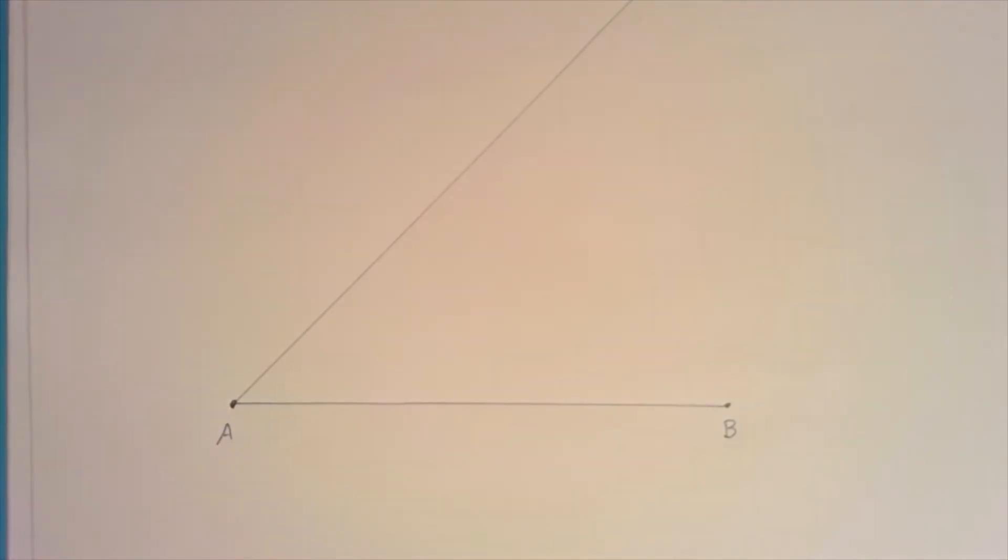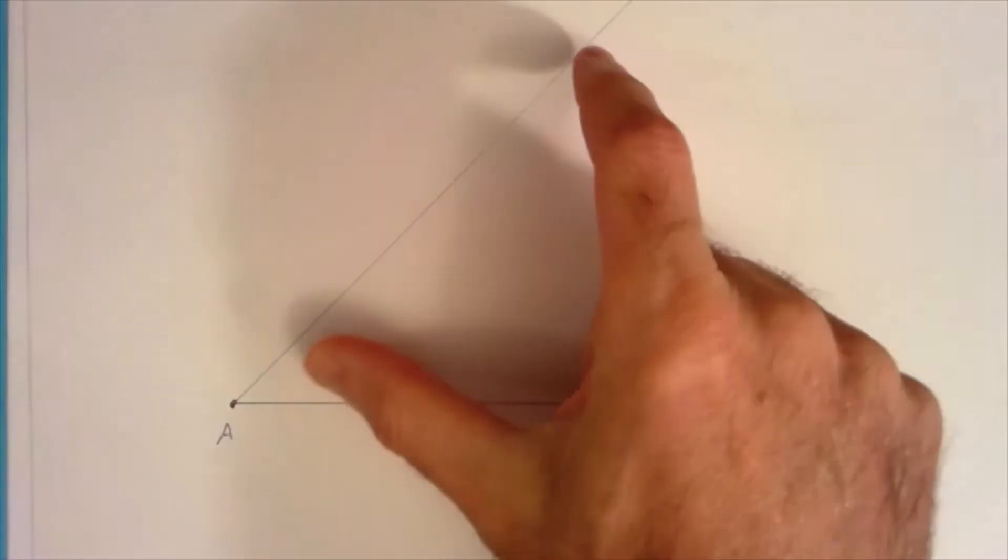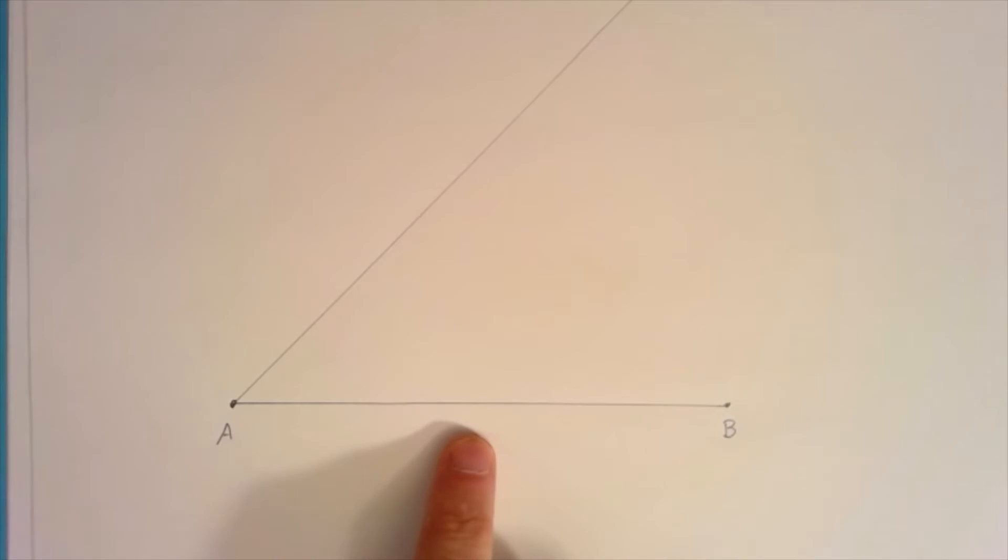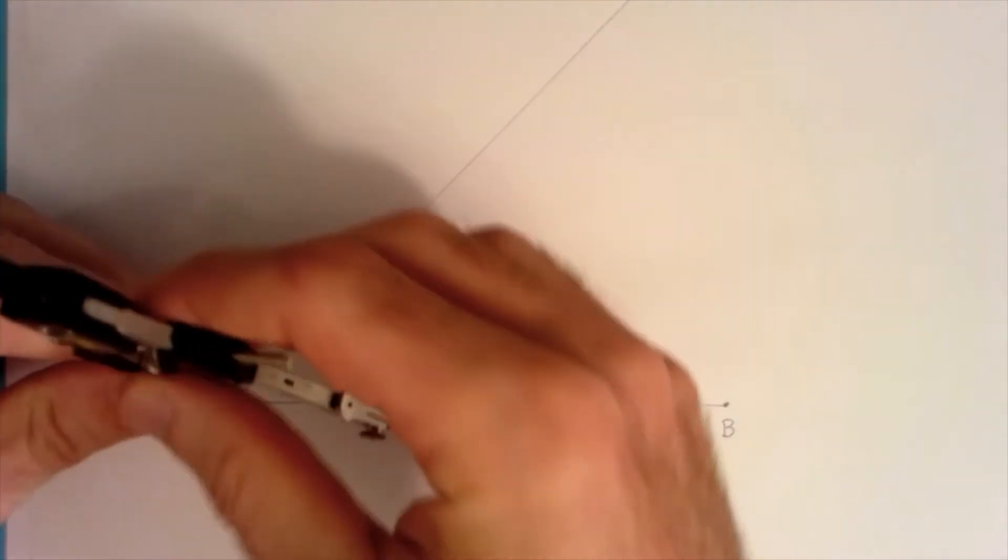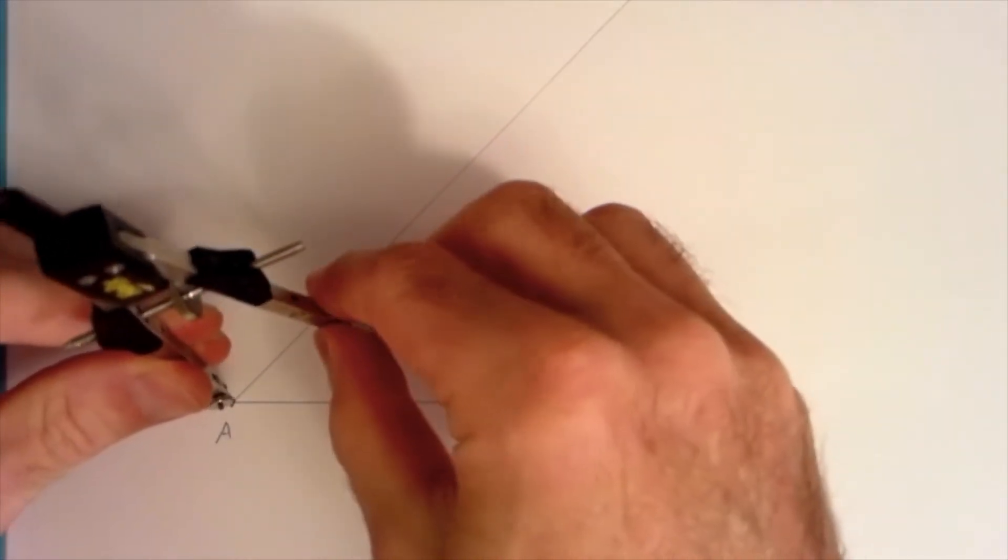And then what we're going to do is we're going to mark off three equal segments of this line here. Now the reason we're doing three is because we want to trisect AB. We want to split this into three parts. If we want to make this into five parts then we would make five equal markings up here. So since we're going to just do three then I'm going to make three marks here with my compass.